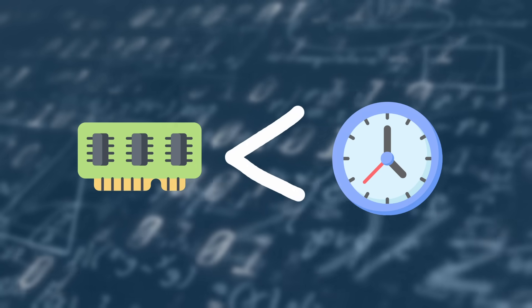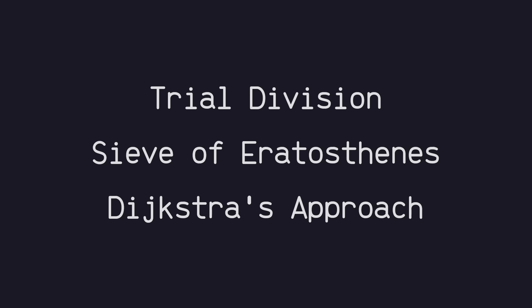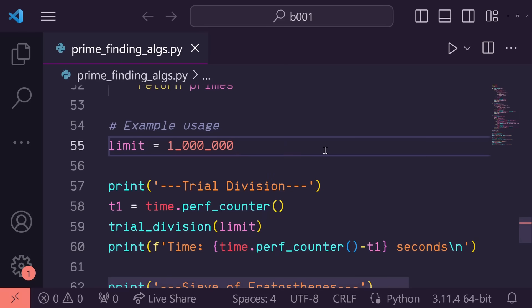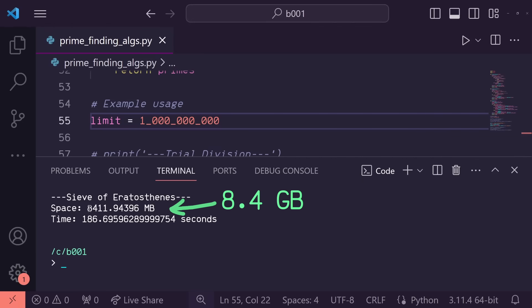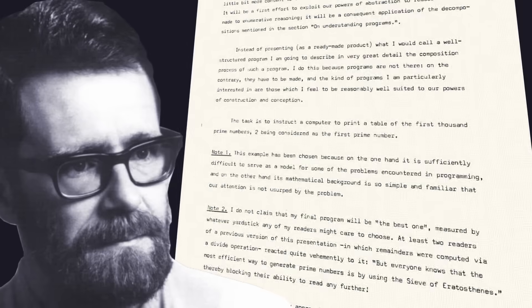In most cases, space efficiency is far less important than time efficiency, especially nowadays with the large amounts of memory available. So in my opinion, the Sieve of Eratosthenes is probably the preferred solution in most cases. Its space requirement, while relatively larger, is still not much of an issue. However, if you start trying to find primes up to around 1 billion, its memory dependence definitely starts to become a problem. All of these algorithms have their time and place — none is a one-size-fits-all solution, as beautifully noted by Dijkstra himself: 'I do not claim that my final program will be the best one, measured by whatever yardstick any of my readers might care to choose.'